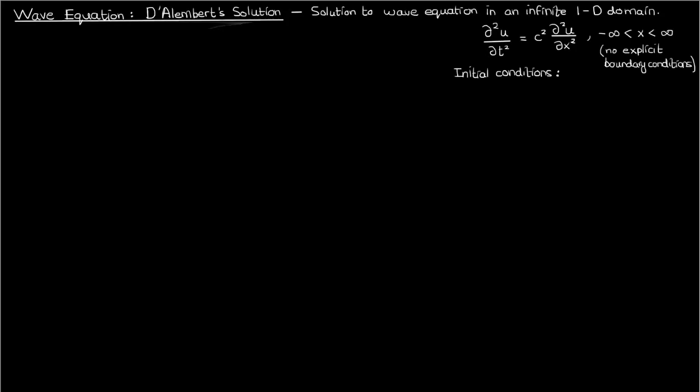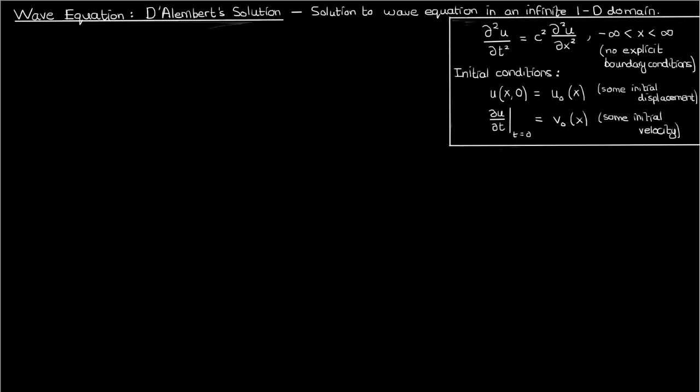So let's suppose that our initial conditions are the most generic ones possible. At time 0, our function u is just some arbitrary initial displacement, u0 of x. And at time 0, our du dt is just an arbitrary initial velocity, v0 of x. In this lecture, we're going to solve this whole PDE problem and find the solution u for an infinite spatial domain with these two initial conditions.